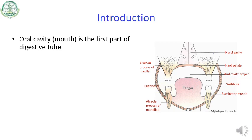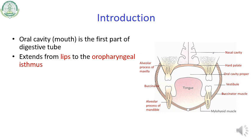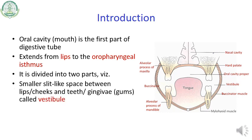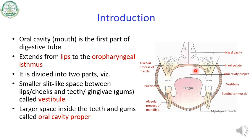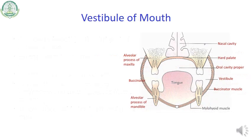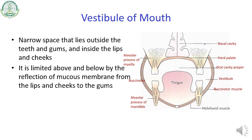The oral cavity is the first part of the digestive tube. It extends from the lips to the oropharyngeal isthmus. It is divided into two parts: the smaller slit-like portion is the vestibule — the gums are also sometimes called gingyvae — and the larger space is called the oral cavity proper. Both are connected with each other from behind, and that is called the retromolar region.